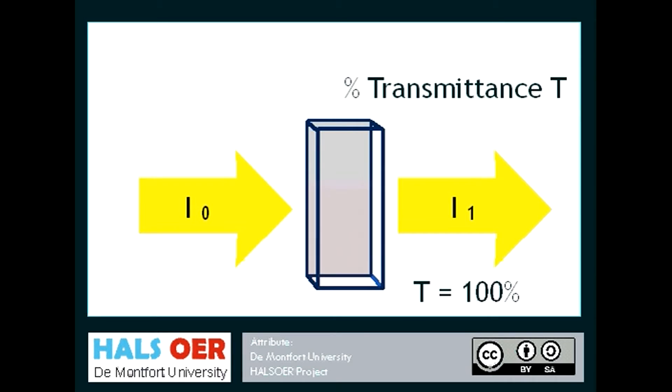This would happen for distilled water, for example, where the majority of light would pass straight through. Measurements can also be expressed as the absorbance, A. That is the amount of light taken in or absorbed by the solution.